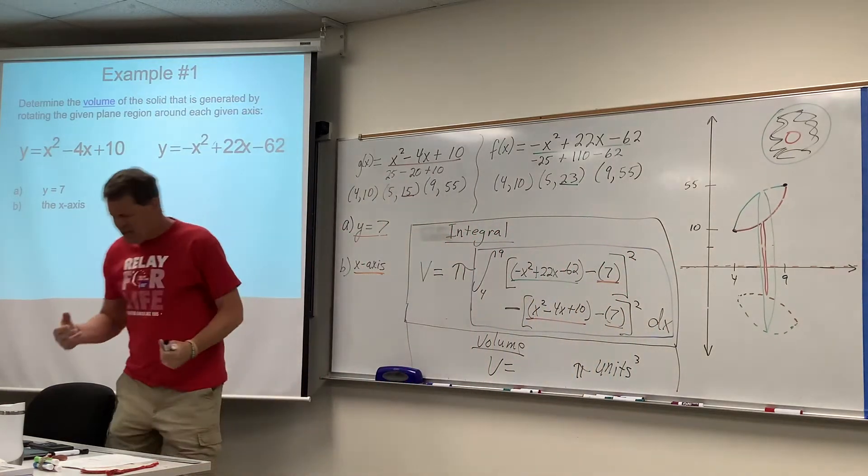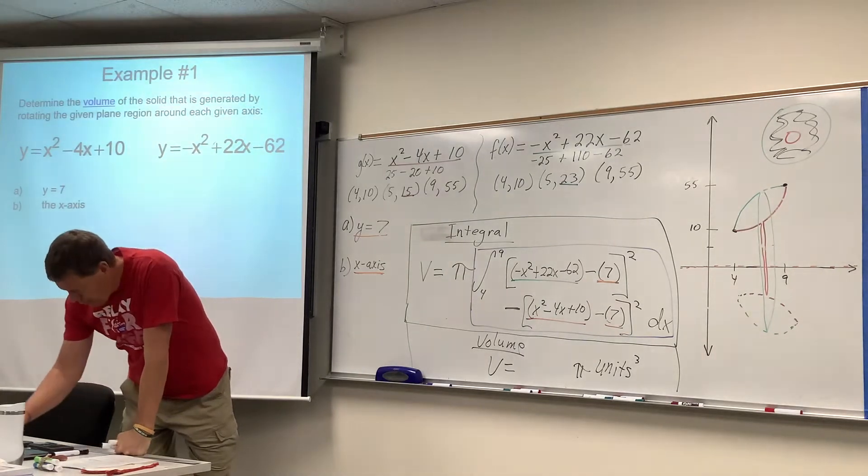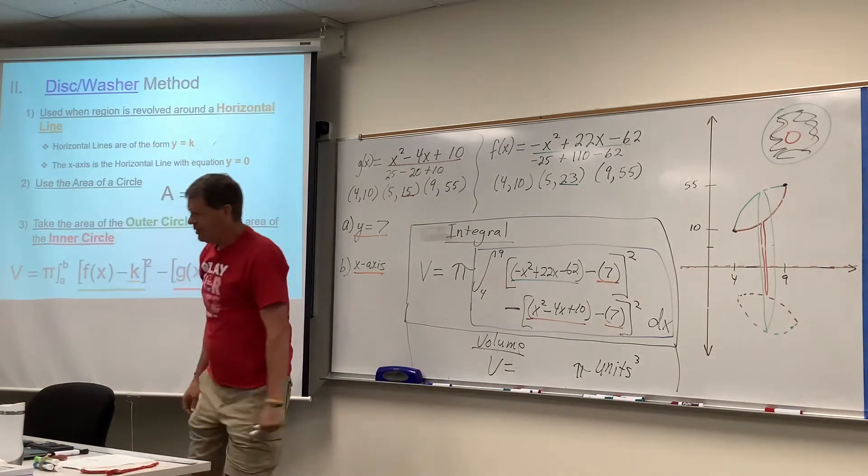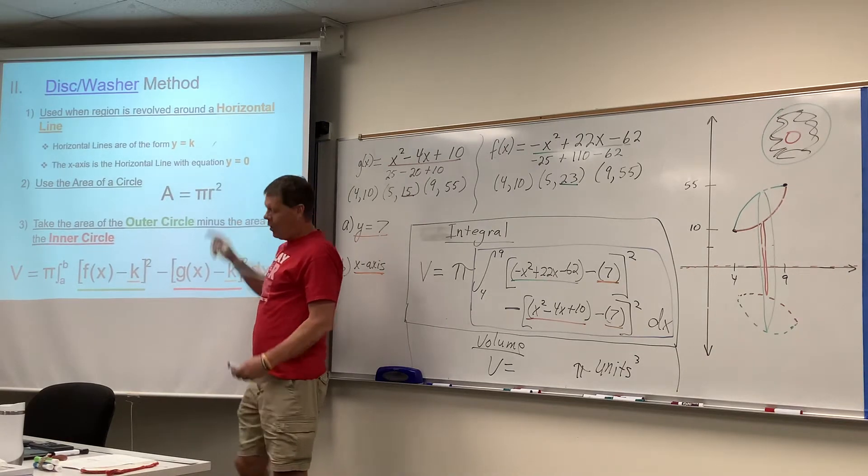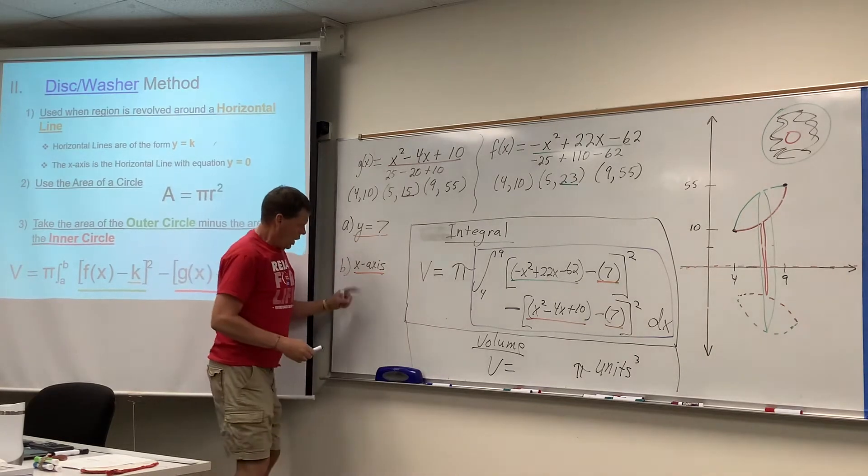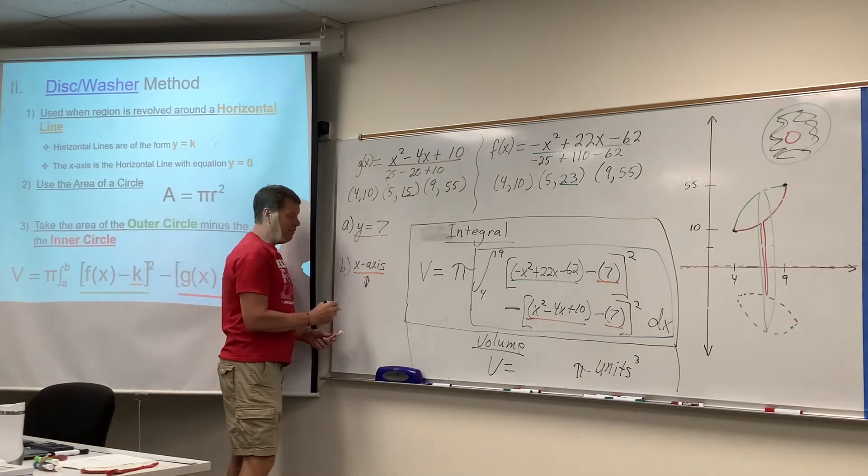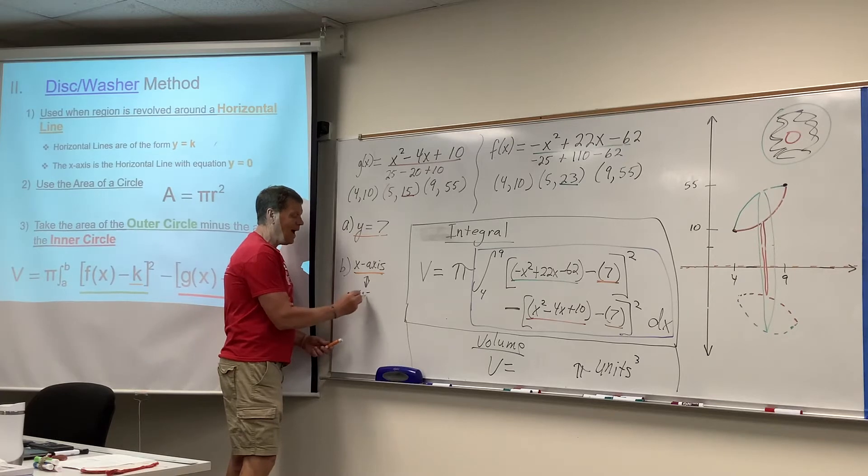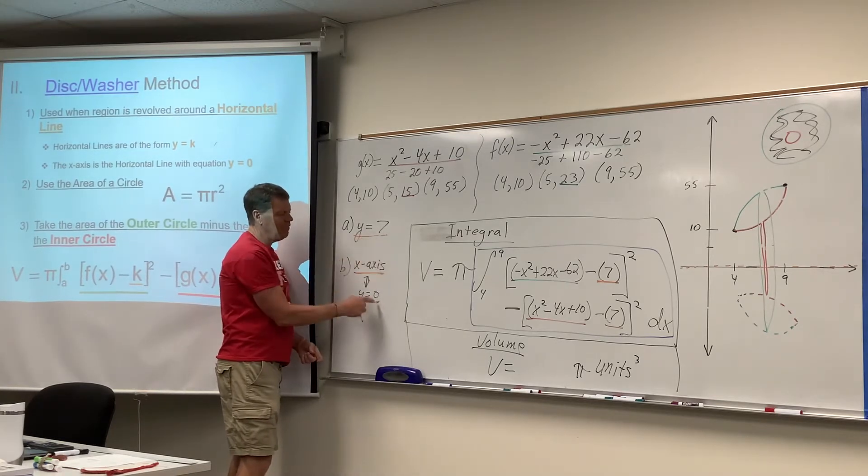And so I guess the question a person could have would be, what's the equation of the x-axis? That's a horizontal line with the equation y equals 0. So it's like, hello, my name is x-axis, but my friends call me y equals 0. All we're doing is changing the k value, aren't we?